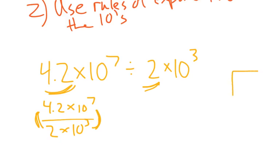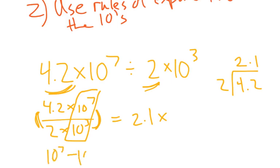And so I might do a little scratch work. 4.2 divided by 2 is going to be 2.1, so it's going to be 2.1 times. And now based off of rules of exponents, what I'm going to do here is do 10 to the 7th minus 3. Subtract those exponents. And when I do that, I'll get times 10 to the 4th. And there we go.